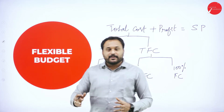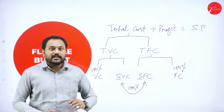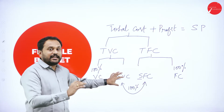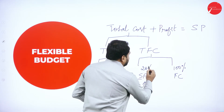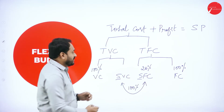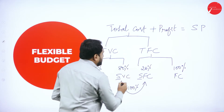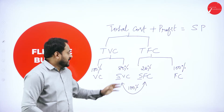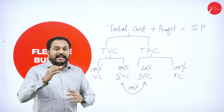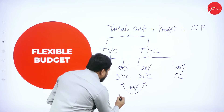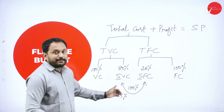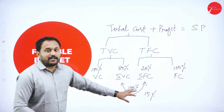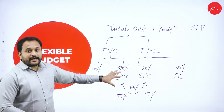For example, factory overheads given as 60% fixed cost means the remaining 40% is variable — that is semi-variable cost. If you have 20% semi-fixed cost, then 80% is semi-variable, because both must add up to 100%. Similarly, if selling overheads are 85% semi-variable, then the remaining 15% is semi-fixed. So whenever percentages are given for one part, calculate the other accordingly.